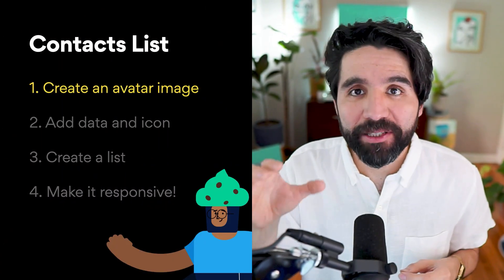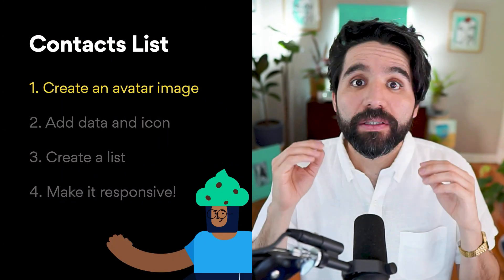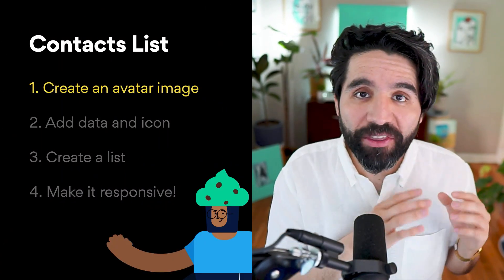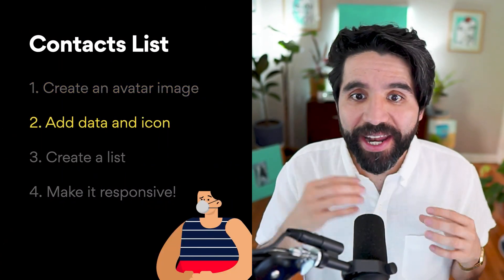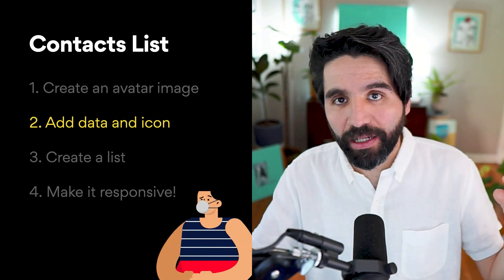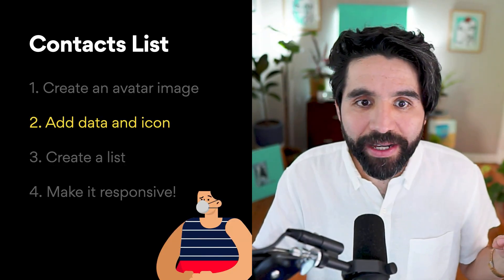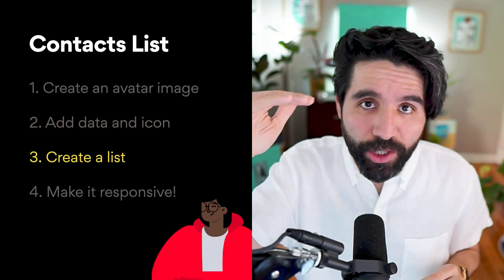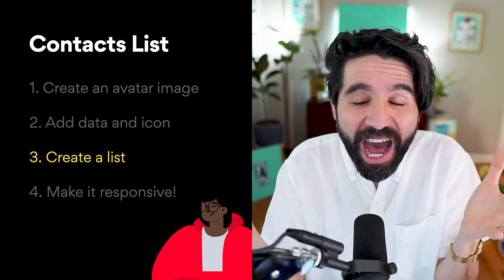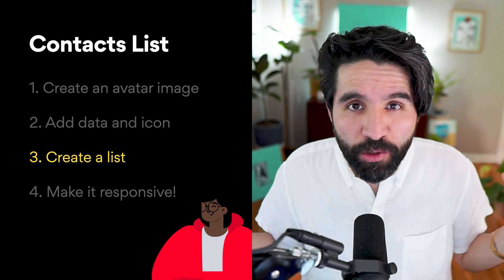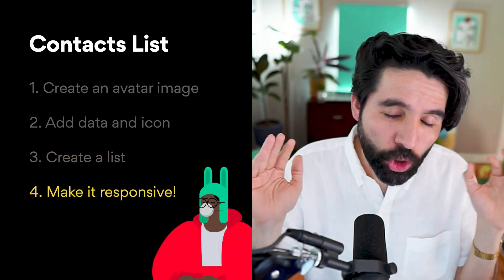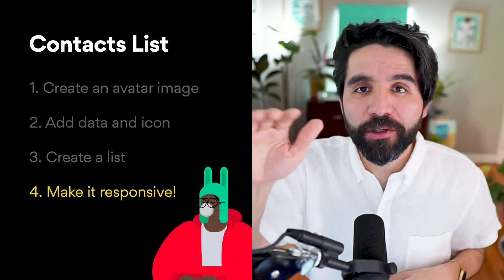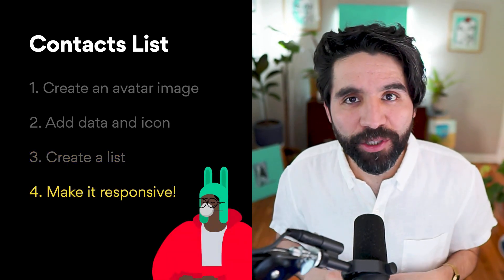First, we'll create an avatar image. Then we'll add our data and an action icon on the right. Then put it all together in a row and create a list. But how is it going to be responsive? Don't worry, we're going to solve this with auto layout. Are you ready? Let's get started.